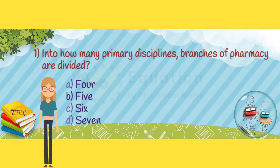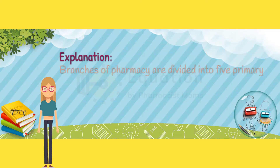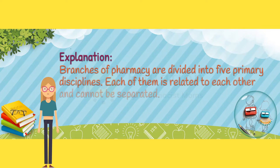The correct answer is Option B. Branches of pharmacy are divided into five primary disciplines. Each of them is related to each other and cannot be separated.